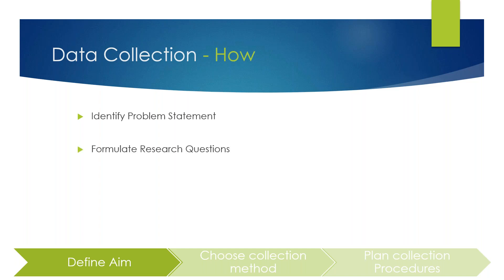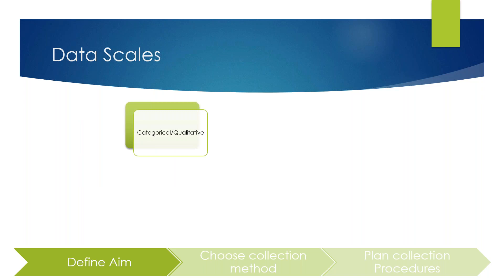The next step is to formulate your research questions. Once you've identified your problem statement, the research questions will define exactly what you want to find out. Based on these questions, you determine the type of data you want to collect. There are two main types: qualitative data, which is expressed in words and can be categorized, and quantitative data, which is expressed in numbers and graphs and analyzed using statistical methods.